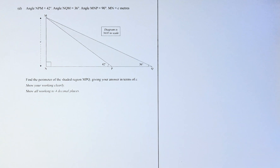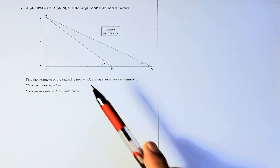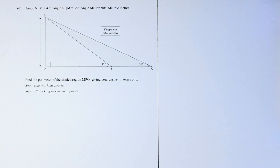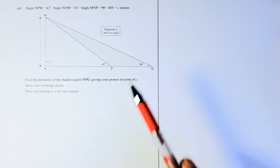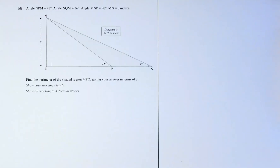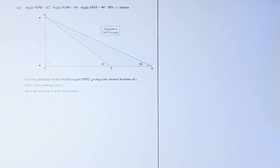Angle NPM is 42, so that angle is 42. Angle NQM is 36, so that's 36. Angle MNP is 90, so that's 90, and the length MN is C. Find the perimeter of the shaded region, giving your answers in terms of C. Show all your working to 4 decimal places.